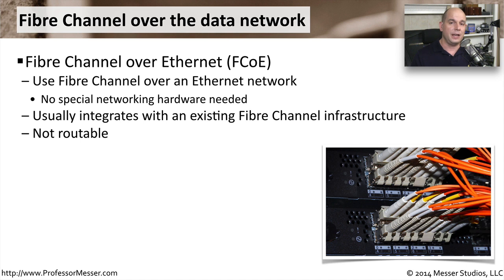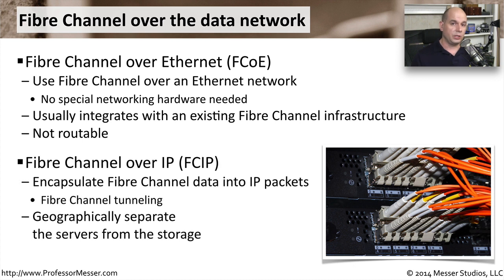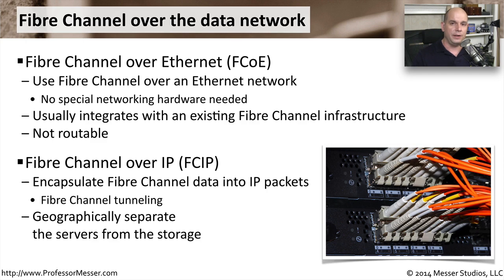You don't often run FCoE over larger distances where traffic would be routed. There is a solution for sending fiber channel information over routable IP networks, and that's called fiber channel over IP, or FCIP. Fiber channel over IP takes all the fiber channel information and encapsulates it within TCP/IP packets themselves. This is sometimes referred to as fiber channel tunneling, because we're putting all the fiber channel information and tunneling it through that IP network. This allows devices that are geographically dispersed across multiple locations and multiple data centers to still send information and use the storage network on the fiber channel infrastructure.